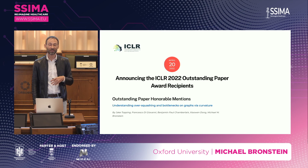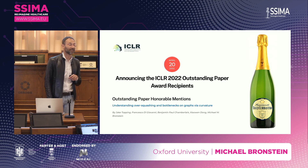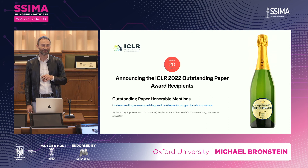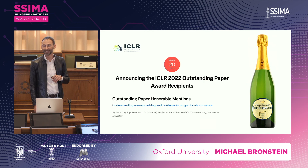This work on Ricci curvature was done by my PhD student Jake Topping and my postdoc Francesco Di Giovanni, and it received an honorable best paper mention at ICLR. The best way to celebrate a paper on Ricci curvature is with a bottle of champagne from Ricci-Curbastro — actually from the same family as Gregorio Ricci-Curbastro, the famous Italian winemakers.